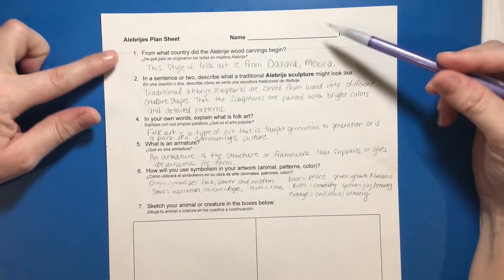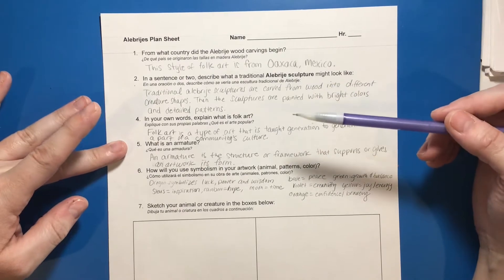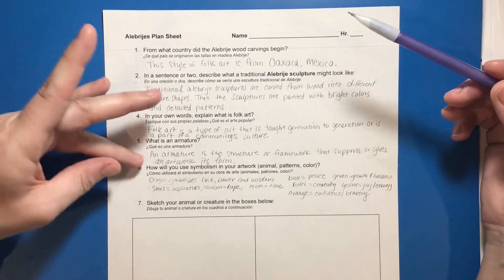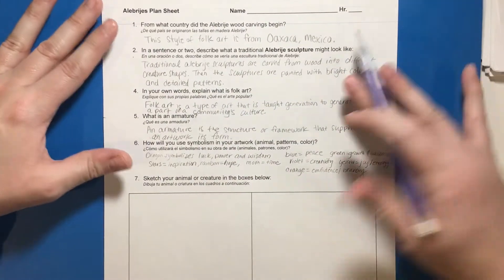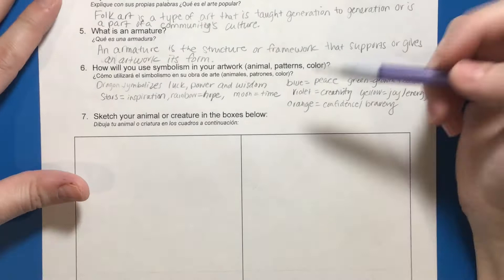Okay, so you should have your notes taken for questions one through five. Sorry I skipped a number here, but the first couple of questions through armature should be complete. So now it's time for you to figure out what you want to do for number six.